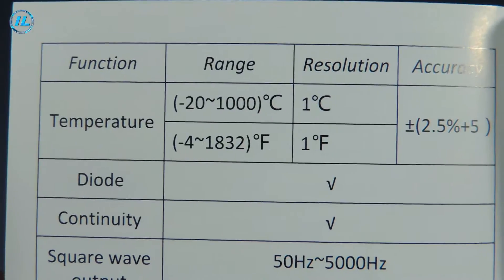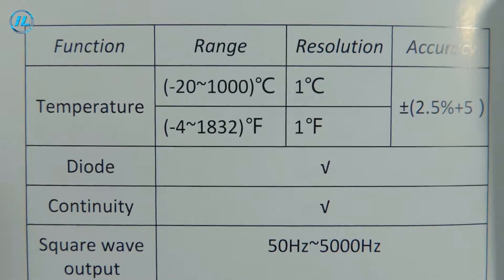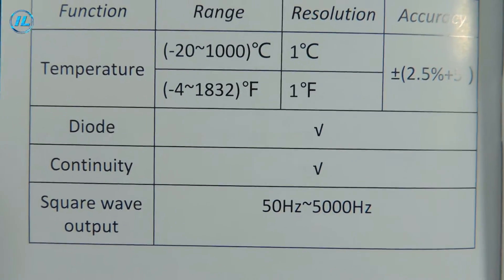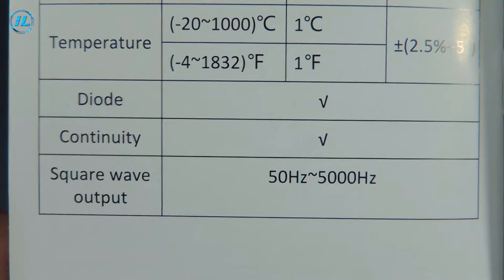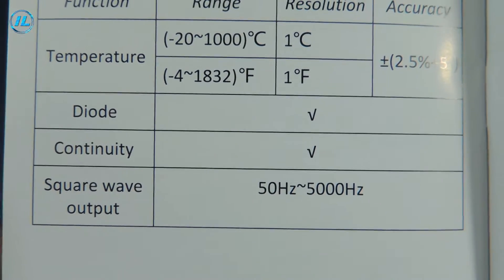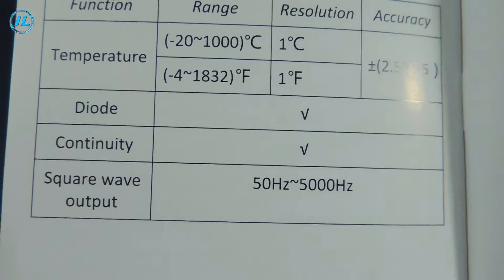The last page with the specifications of this multimeter. Temperature measurement up to 1000 degrees Celsius. There are also standard functions for checking diodes and checking the electrical circuit. The ZTM-1 multimeter can be used as a square wave generator with a frequency from 50 hertz to 5 kilohertz.